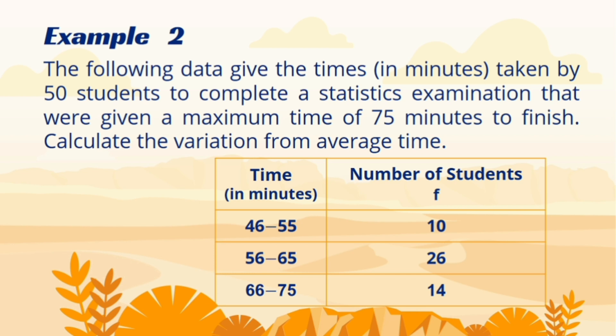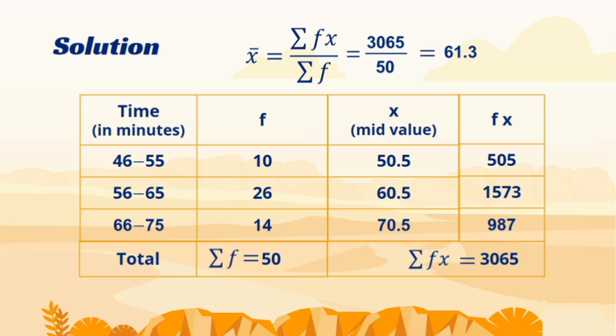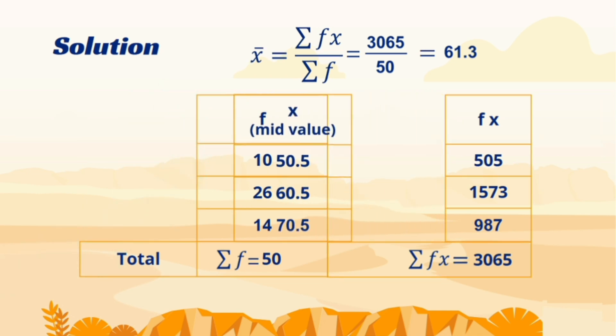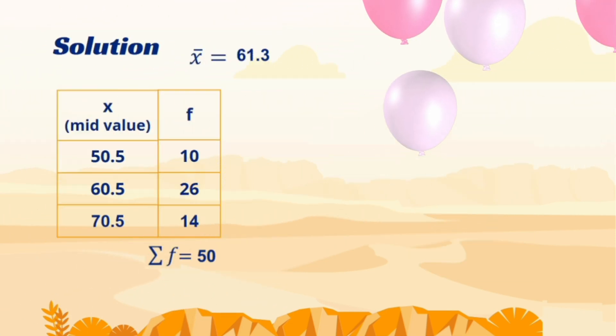And for grouped data, we again use example number 2, where now our teacher will check the variation in completing a paper of his 50 students. In solution section, we again find the average first. According to the formula, we don't need values in classes. So we make another column named mid values. If classes are not given, only the mid values are there, then obviously we don't need to make another column.